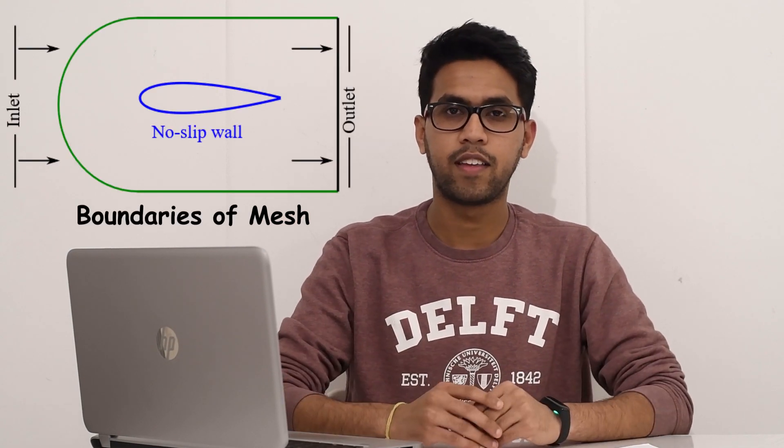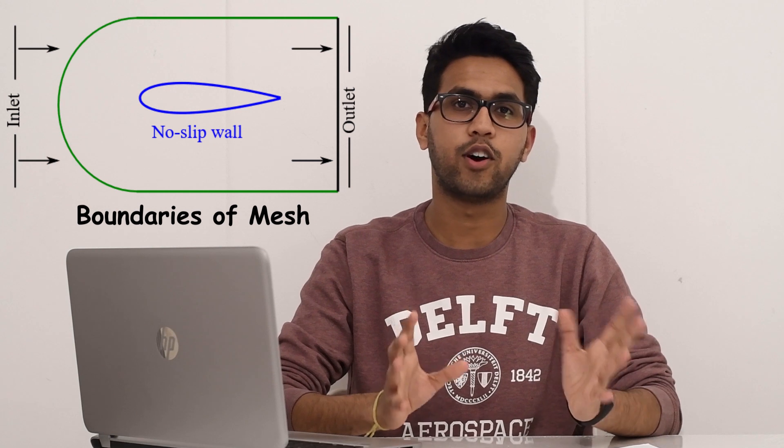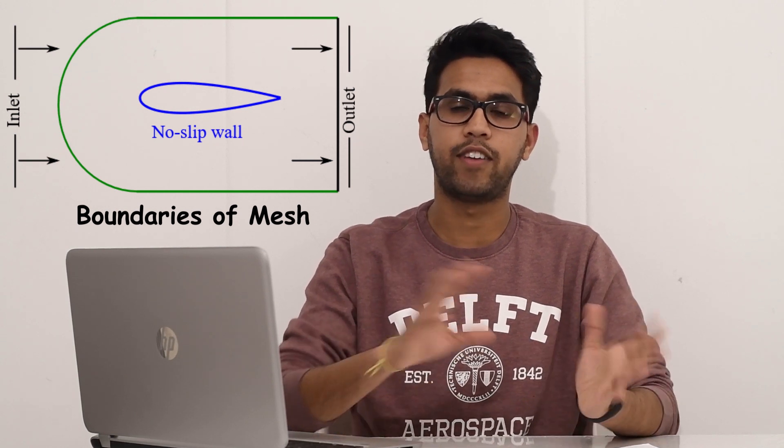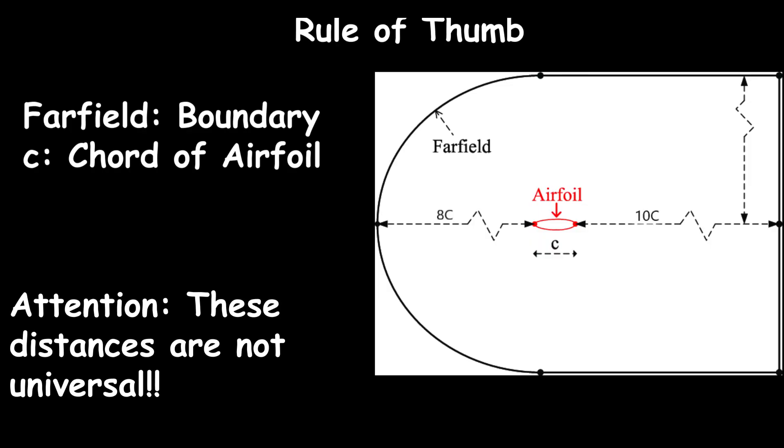Before we start with the meshing process, we need to define where the boundaries of the mesh should lie. Why is this important? This is because there might be boundary effects which will affect your forces. As a rule of thumb, the boundary of the mesh should be placed 10 length scales away from your geometry.